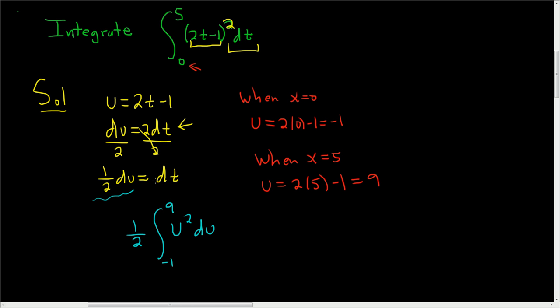Okay. So the dt was 1 half du, so that's here, 1 half du. And then we simply have u squared, and the limits are negative 1 to 9. All right. Now we're ready to go ahead and integrate this. This is 1 half u cubed over 3, and we're going from negative 1 to 9.